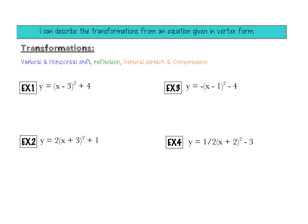Let's identify transformations for example 1, working from the parent graph y = x². Looking at the equation, I see a 3 on the inside — that's my H, my horizontal movement. There's a plus 4 on the end — that's my K, my vertical movement. There's no negative, so no reflection, and no vertical stretch or compression since A = 1, so it follows the normal parent table. With H = 3 and K = 4: x minus 3 means a right shift of 3, and plus 4 on the end means a shift up 4.